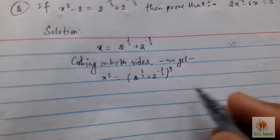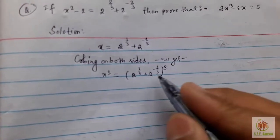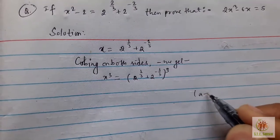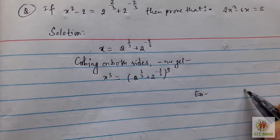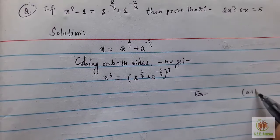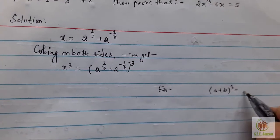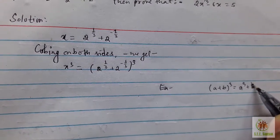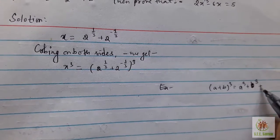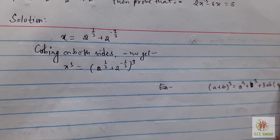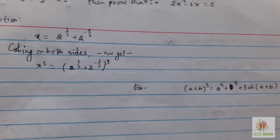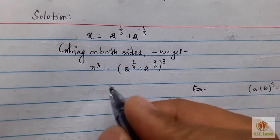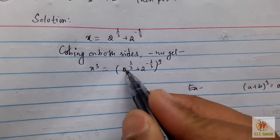We use the formula: (a + b)³ = a³ + b³ + 3ab(a + b). Apply this formula here.